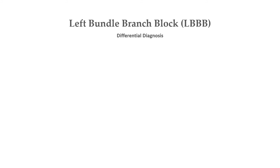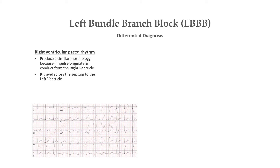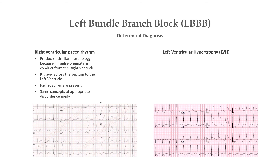Finally, let's look at some of the differential diagnoses of left bundle branch block. One is right ventricular paced rhythms, which will produce a similar morphology. This is so because impulse conduction originates from the right ventricle and travels across the septum to the left ventricle, as is the case in LBBB. Pacing spikes will be present, and the same concepts regarding appropriate discordance apply. The second differential diagnosis is left ventricular hypertrophy. LVH may produce a similar appearance to LBBB, with QRS widening and ST depression and T wave inversion in the lateral leads.